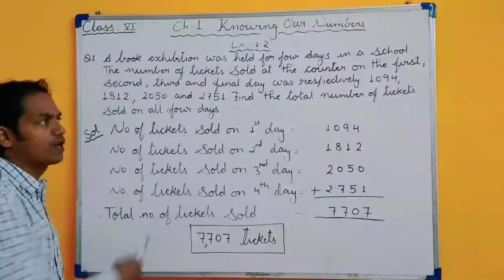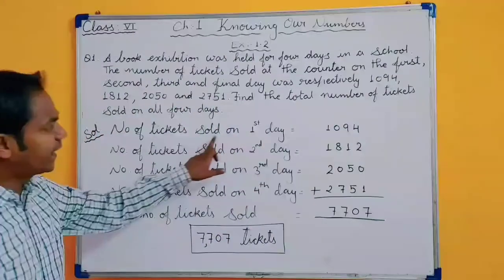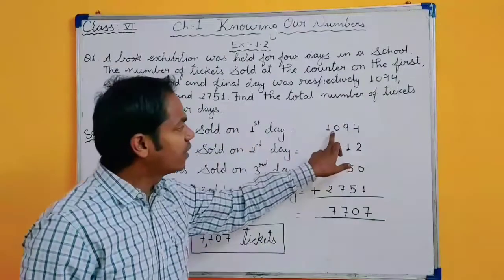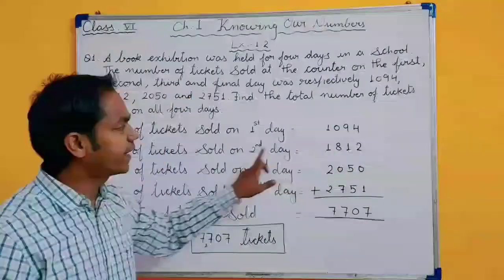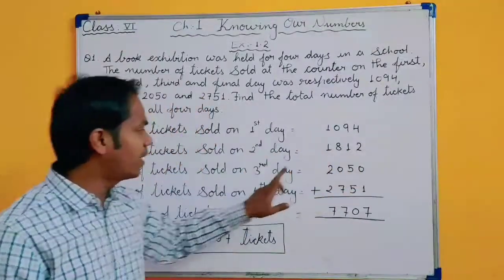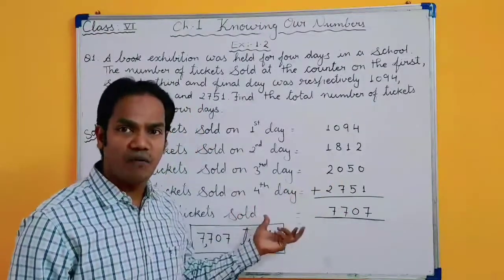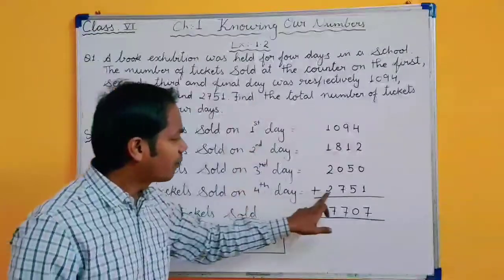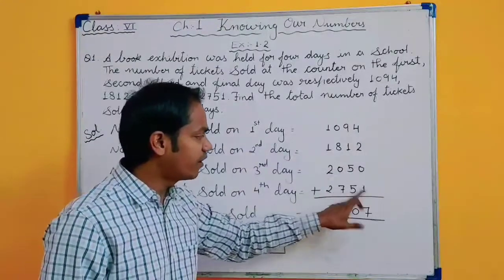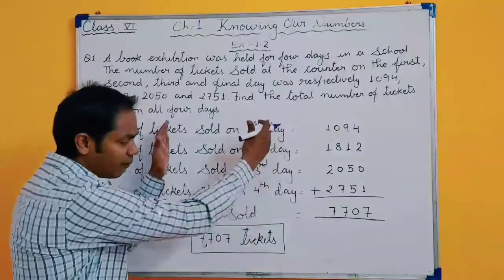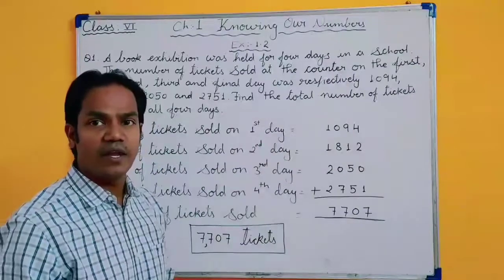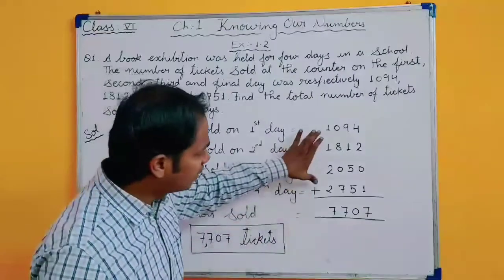So here is the solution for question number 1. Number of tickets sold on the very first day is 1094, 2nd day 1812, 3rd day 2050 and 4th day or on the final day, the number of tickets sold is 2751. To find the number of tickets sold on all 4 days, you will add all the tickets.